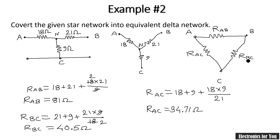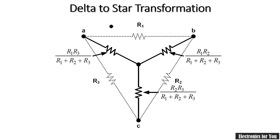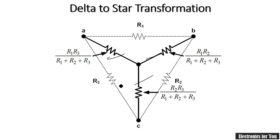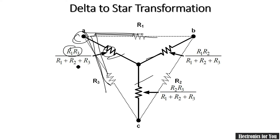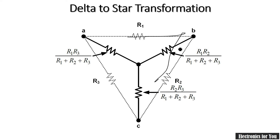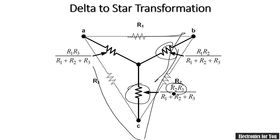You can write the respective values and thus a star network can be converted into equivalent delta network, or we can say a T network can be converted into a pi network. That is example number two. The next is delta to star transformation. You can see this is our delta network indicated by dotted line and we have to convert it into equivalent star network. The formula for each resistance is multiplication of the two adjacent resistances divided by the addition of all three.